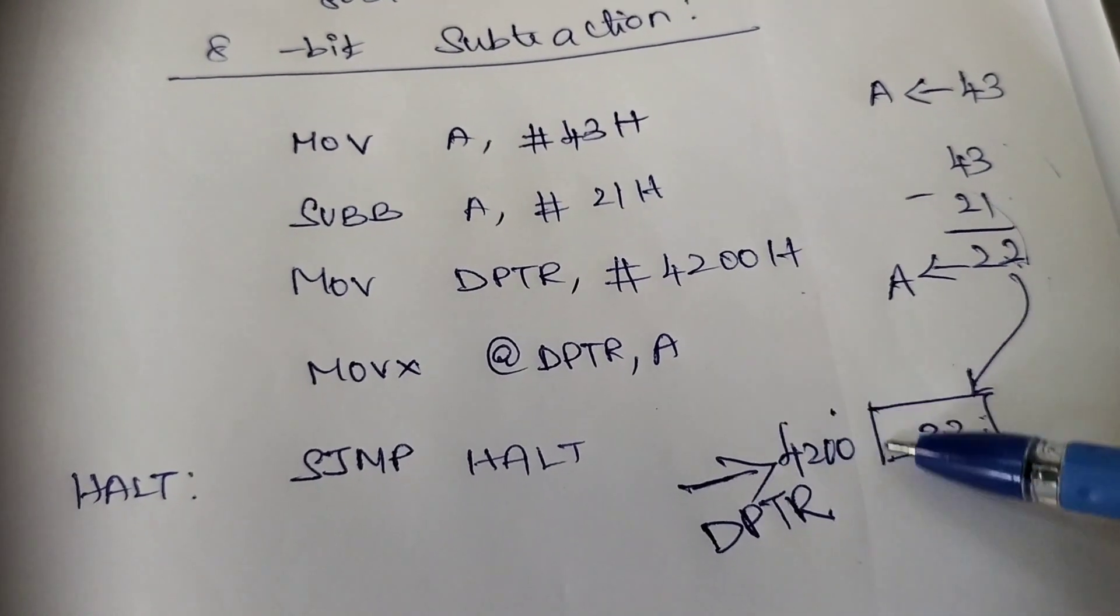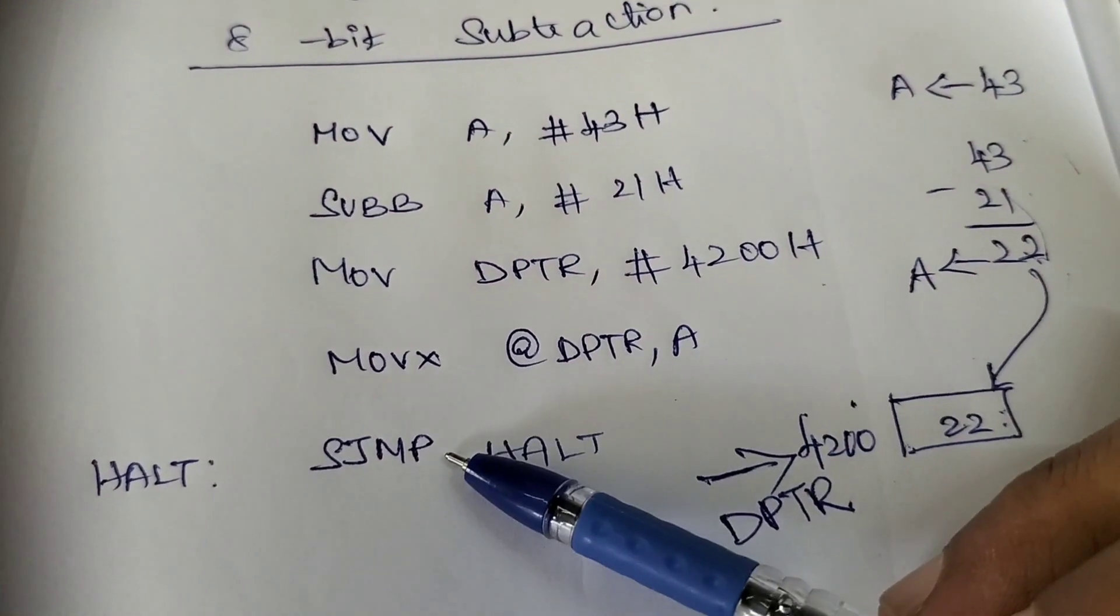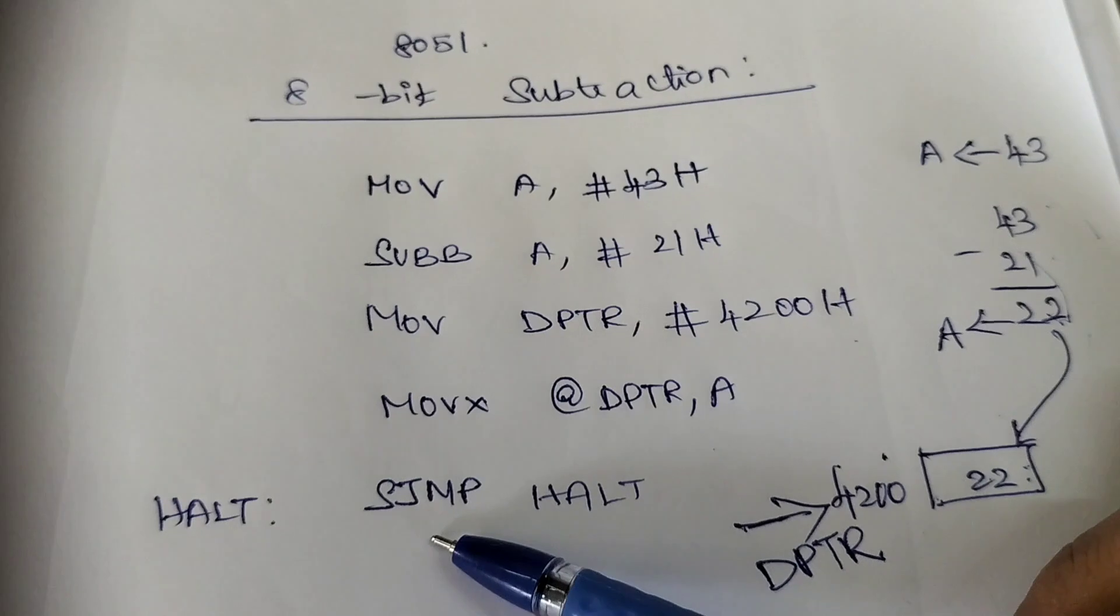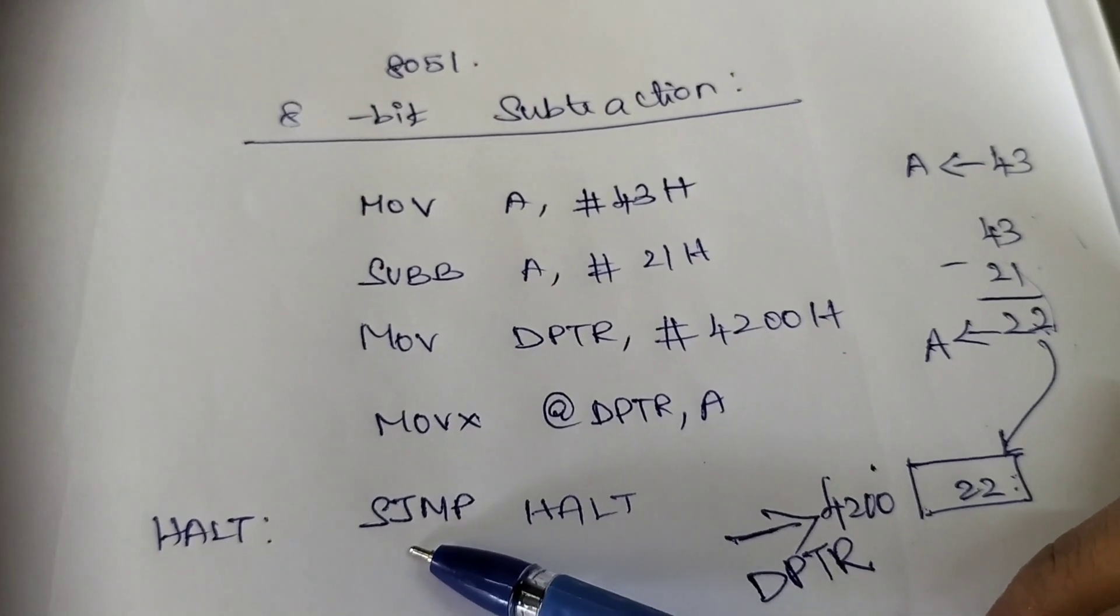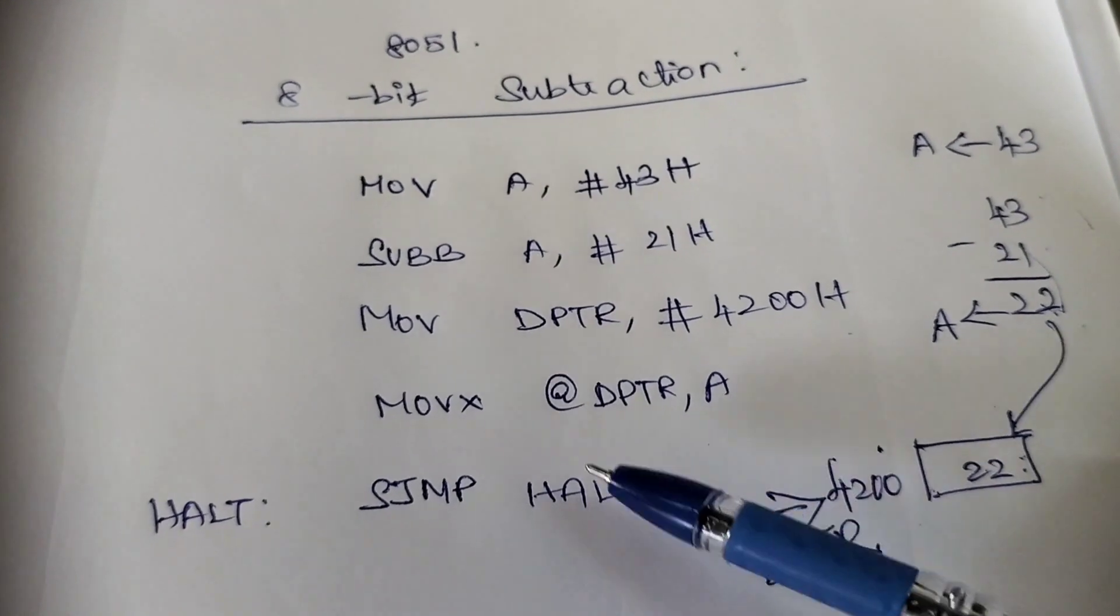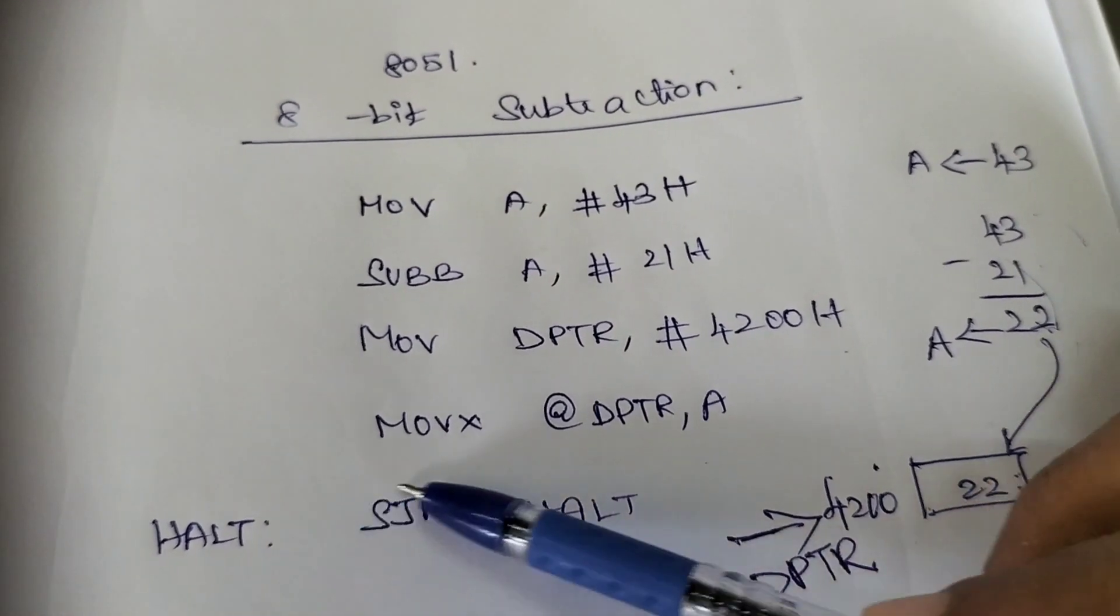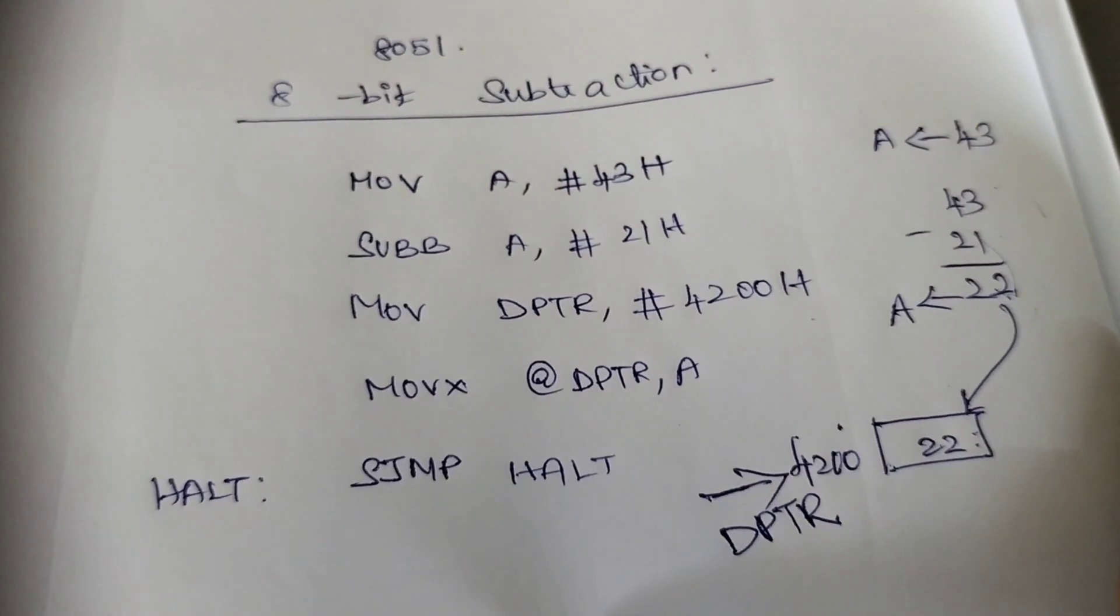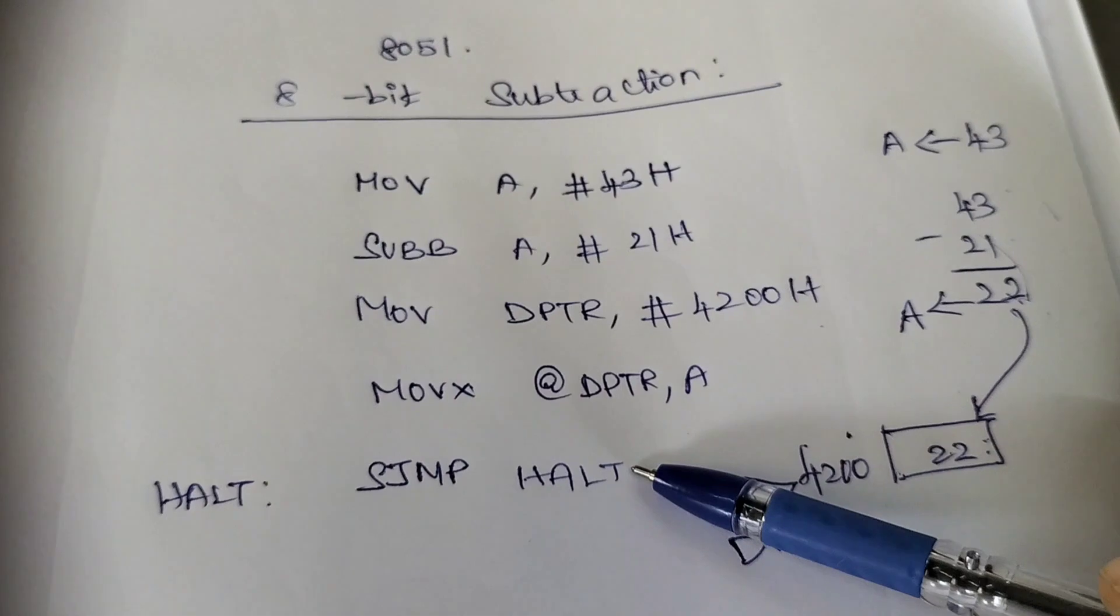You can see the output at location 4200. You do not have HALT instruction in 8051, so we need to use SJMP instruction. SJMP HALT means again and again this instruction will be executed, so 8051 will not proceed with other instructions.